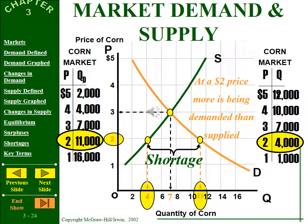In a shortage situation, the price is too low — at $2 a bushel, the market only produces 4,000 bushels of corn, but 11,000 bushels are demanded. We have a massive shortage, and therefore the price must rise to eliminate it.